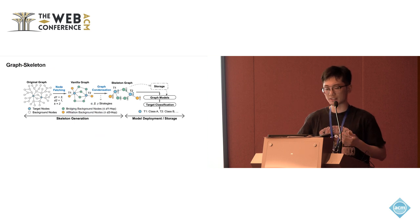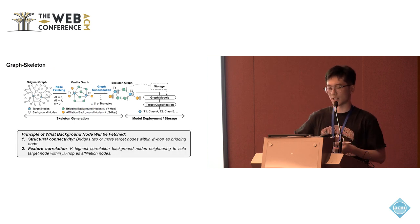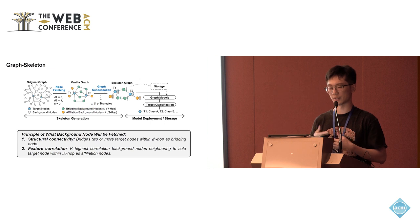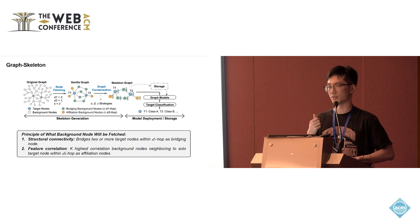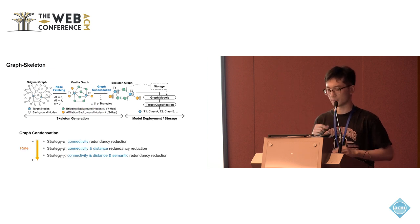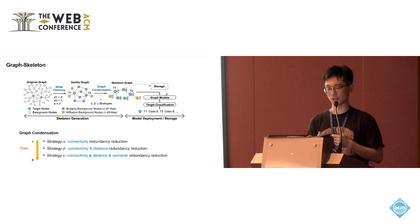Based on these insights, we propose our Graph Skeleton method. It first fetches essential background nodes under the guidance of structural connectivity and feature correlation, just as we discovered. Then we develop three different condensation strategies to reduce the information redundancy of background nodes.